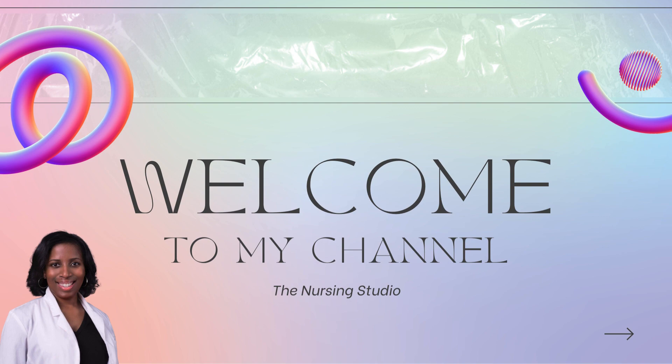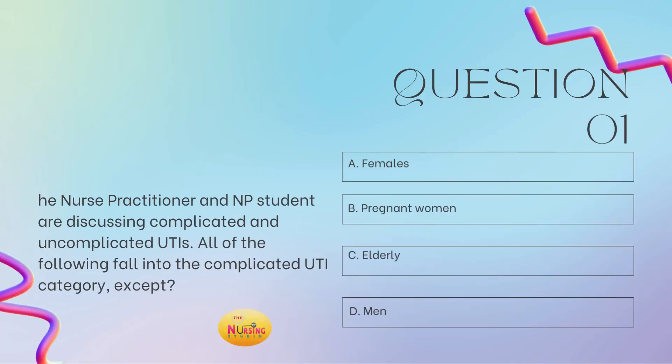All right, you guys, with that being said, let's get into question number one. The nurse practitioner and NP student are discussing complicated and uncomplicated UTIs. All the following fall into the complicated UTI category, except — is it A, females? B, pregnant women? C, elderly? Or D, males? Take a moment and tell me what you got in the comments.